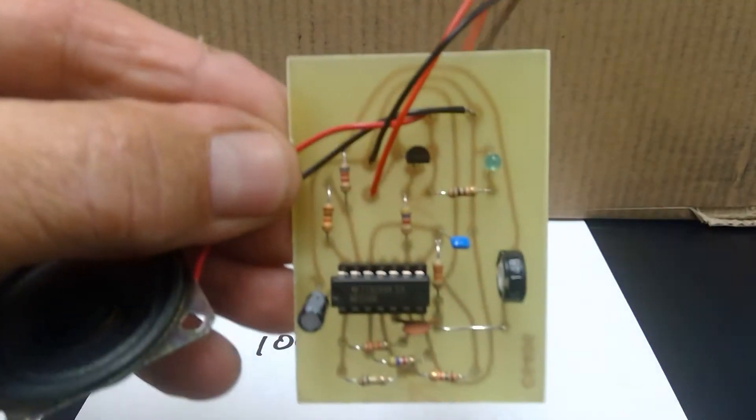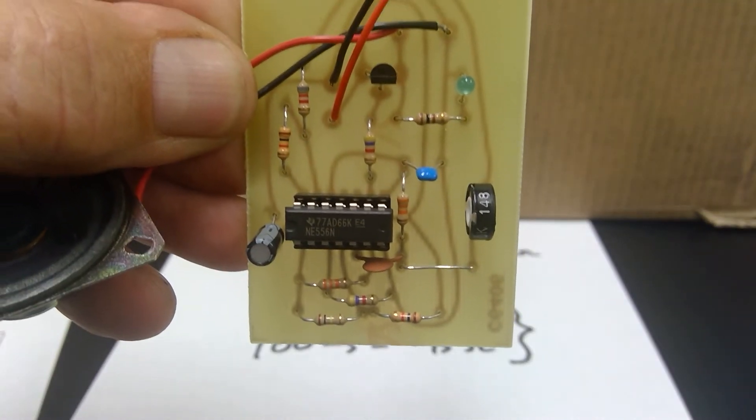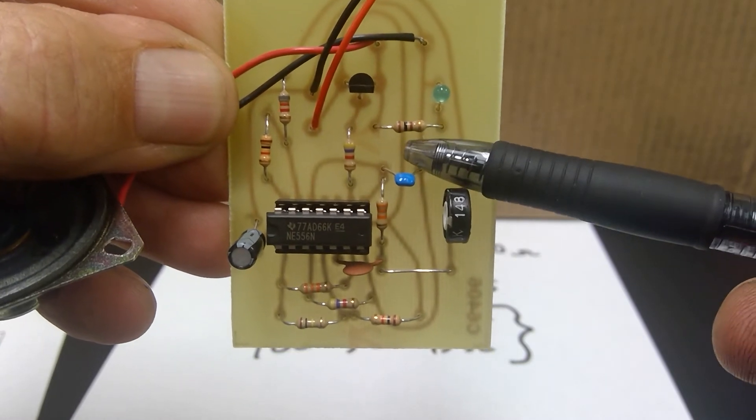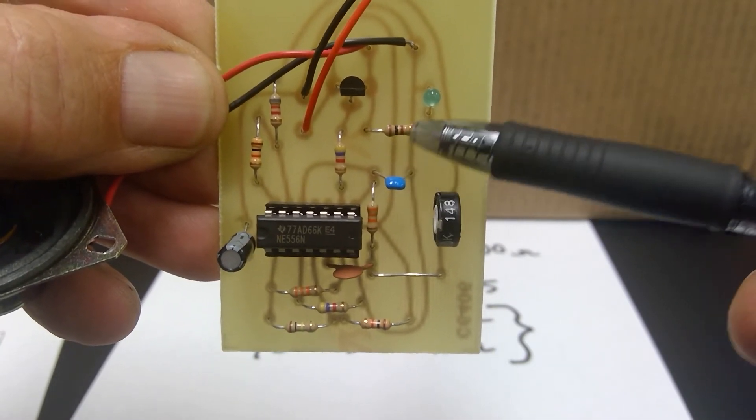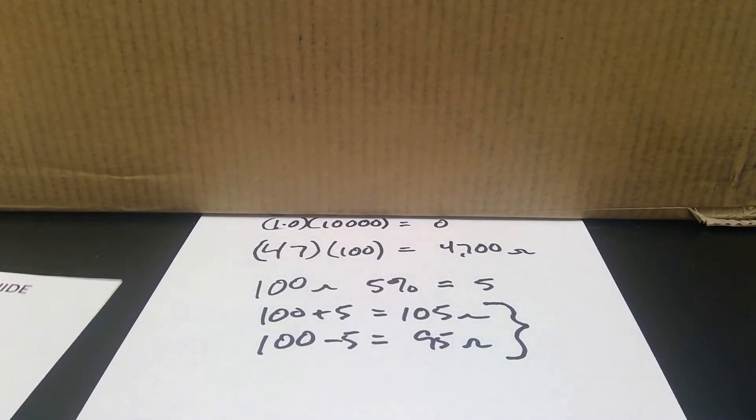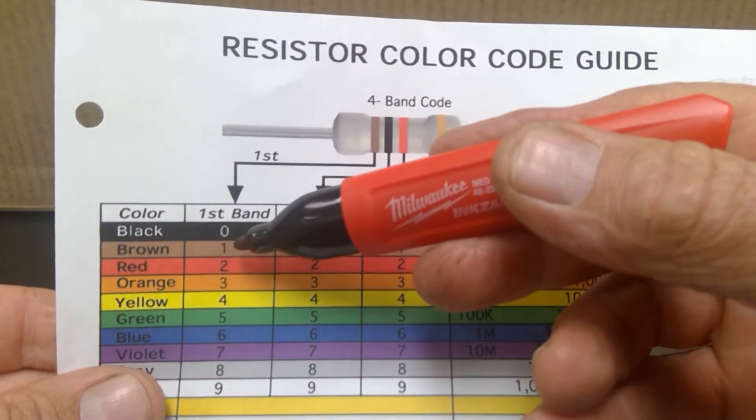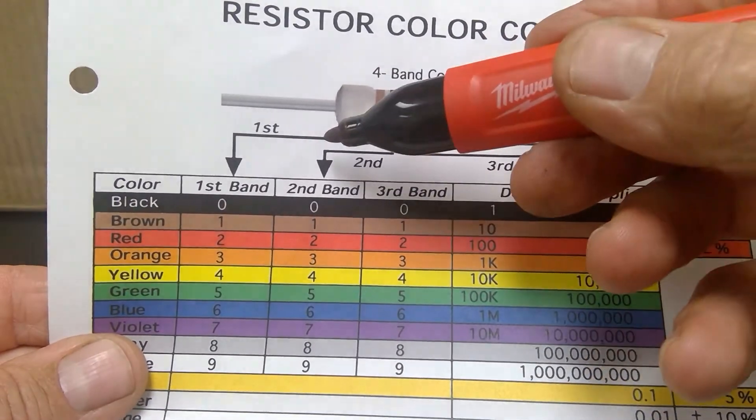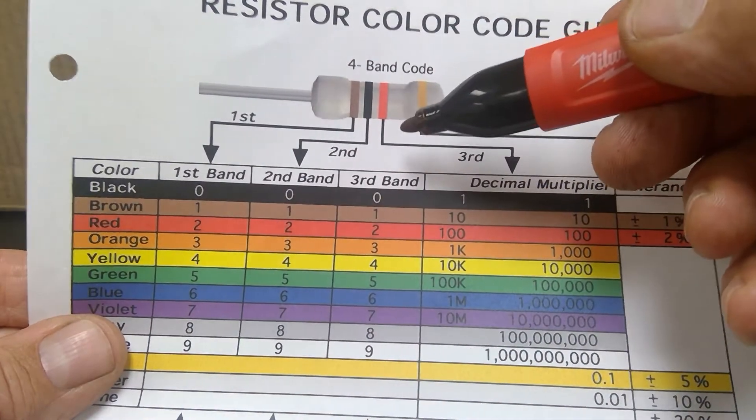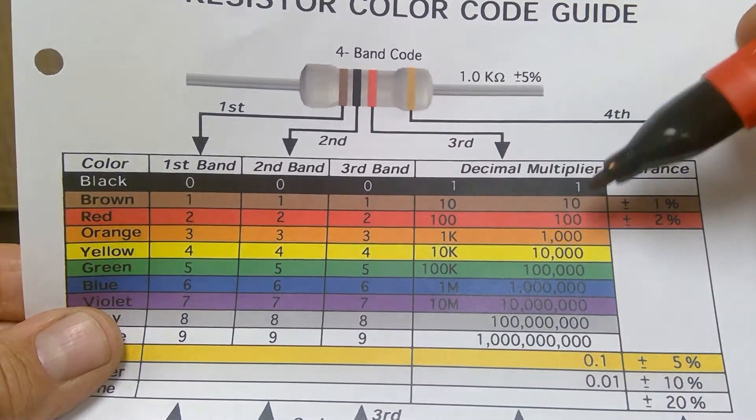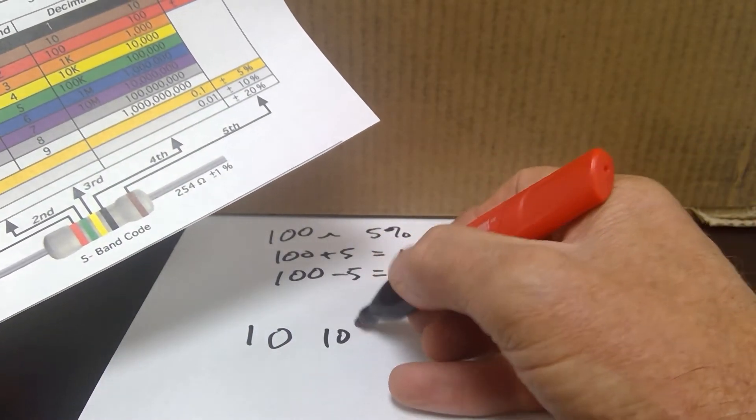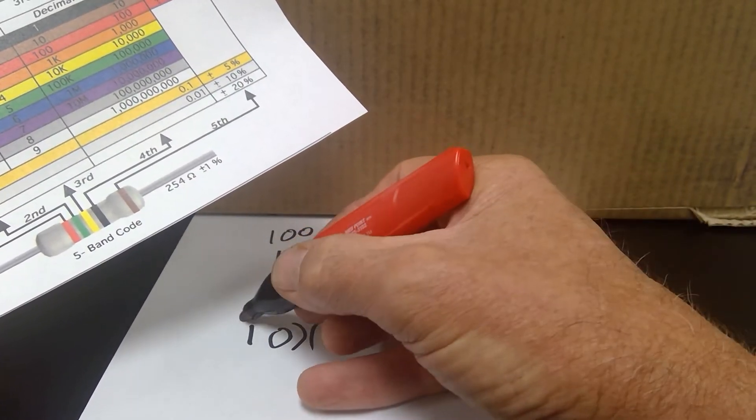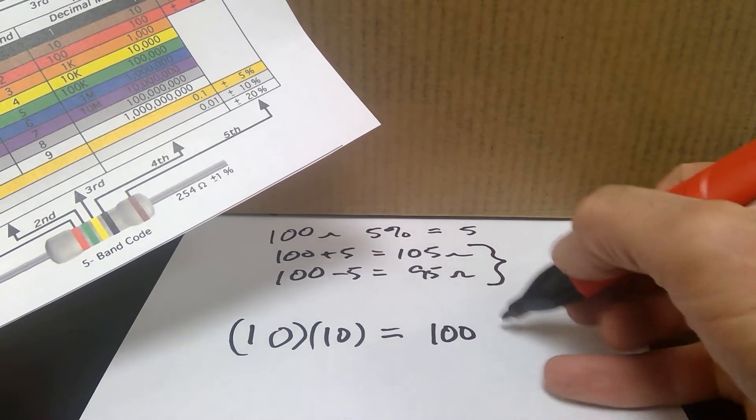So if I were to take one of these resistors, and let's take this one right here. It's brown, black, brown, gold. First band is brown, that's 1. Second band is black, that's 0. The third band is brown, that's my decimal multiplier, that's 10. So it's the number 10 times 10, that equals 100 ohms.